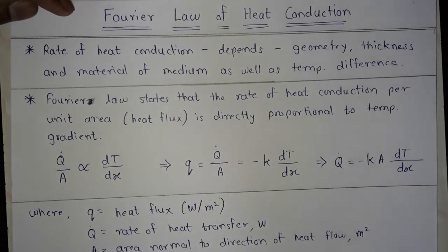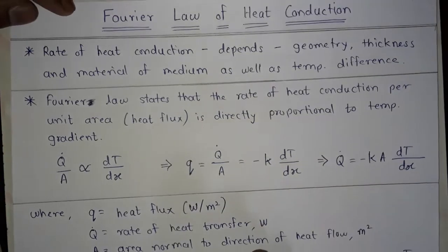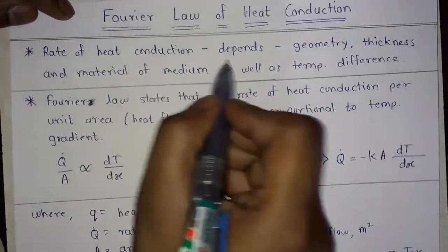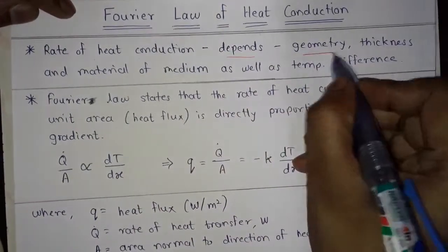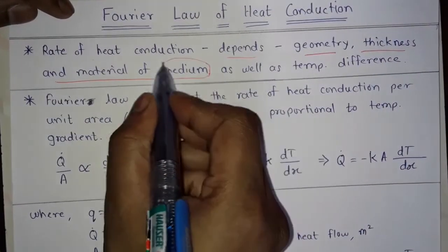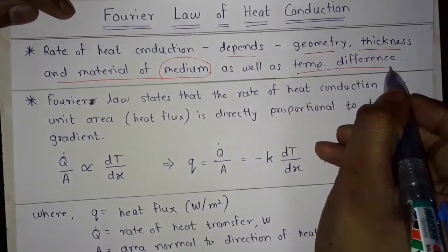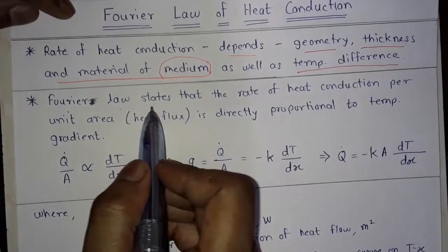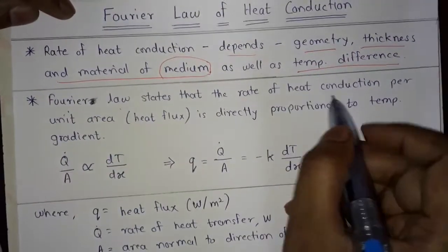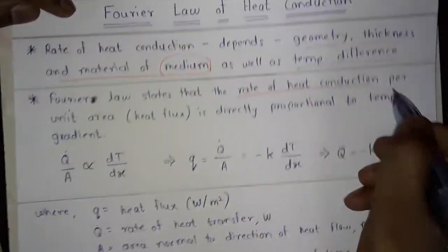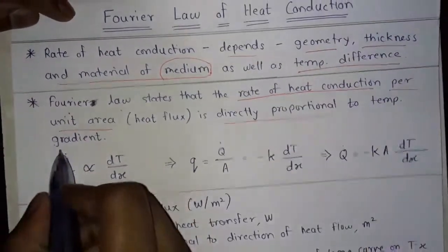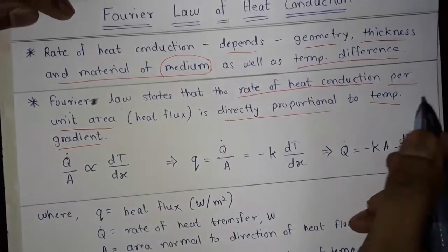We will understand Fourier's law of heat conduction with the help of an example. The rate of heat conduction depends on geometry, thickness, and material of the medium as well as the temperature difference. Fourier's law states that the rate of heat conduction per unit area is directly proportional to the temperature gradient.